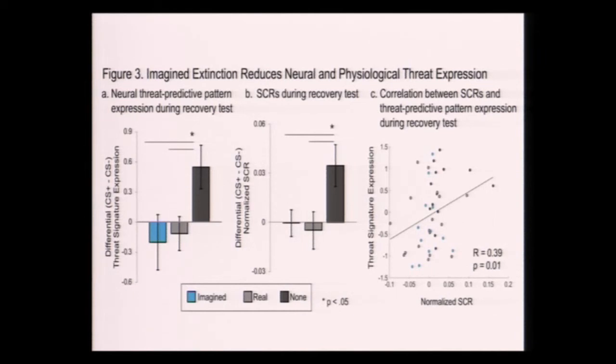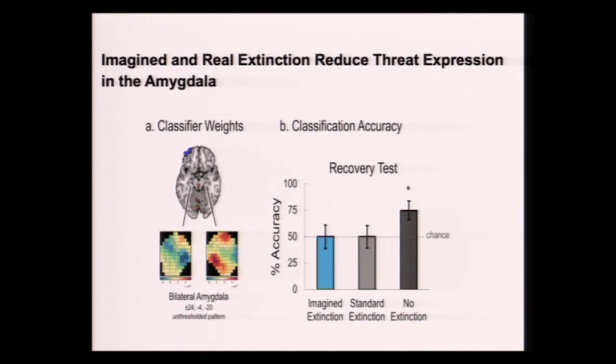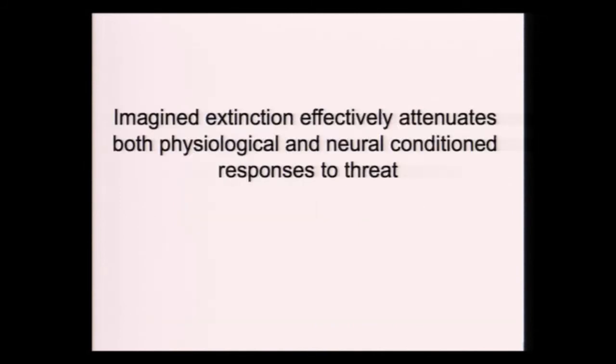So we would take that threat signature and then examine it at the very final stage when they listen to the tones again in the real world after they underwent the various protocols of extinction. And what we would measure is to what degree we can identify that threat signature, that whole brain threat signature. And we can. So when they hear the stimuli again, only the group that had general imagination, that is they didn't undergo extinction at all, show that threat pattern in the brain. Meaning they're still afraid of these tones. But the two other groups, the group that underwent regular extinction and also imagined extinction, didn't show that threat response. This was also consistent with their skin conductance data, their physiological arousal. And there was a correlation between these two measures. This is a specific example in the amygdala.